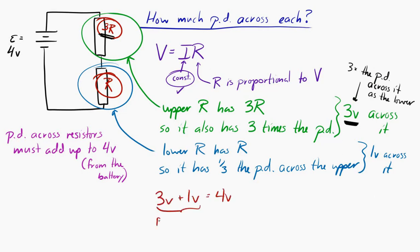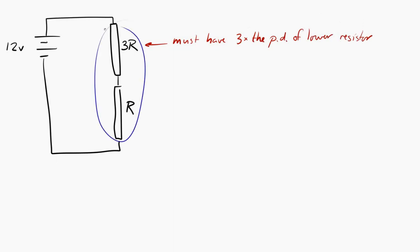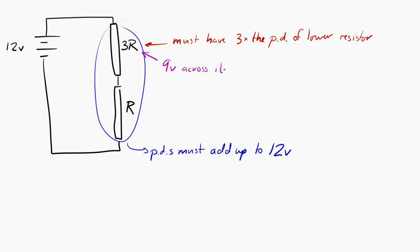Let's try a slightly different example. Say we have a 12 volt EMF with an upper resistor of 3R and a lower resistor of R. The upper resistor still has to have three times as much potential difference as the lower resistor, and the two potential differences must add up to 12 volts. So in this case we have 9 volts across the upper resistor and 3 volts across the lower resistor.